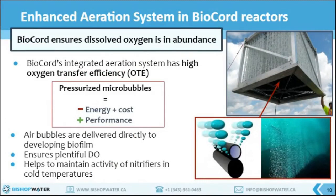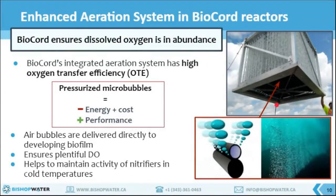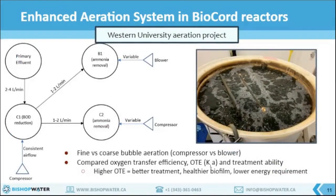Oxygen is typically supplied to biological processes by insufflating air into the system, for example using a blower or a compressor. Oxygen transfer systems account for as much as 60 percent of the energy consumption in typical activated sludge processes, and therefore often represent the most costly part of the biological process. To ensure we can provide an abundant oxygen supply for BioCore reactors without consuming a lot of energy, we developed an integrated fine-bubble aeration system that runs on compressors rather than energy-intensive blowers. The aeration grid is at the bottom of the BioCore frame just under the BioCore media, ensuring that fine bubbles dissolve in the bulk liquid and oxygen is delivered directly to the biofilm.